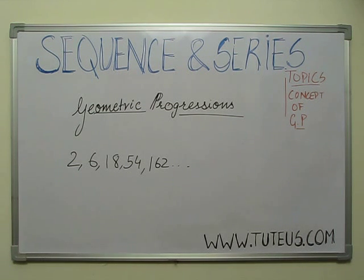And then, what can I do? I observe that the next term comes from the previous term multiplied by 3. Because if I do 2 into 3, then 6 comes. If I do 6 into 3, then 18 comes. 18 into 3, then 54. 54 into 3, then 162 and so on.